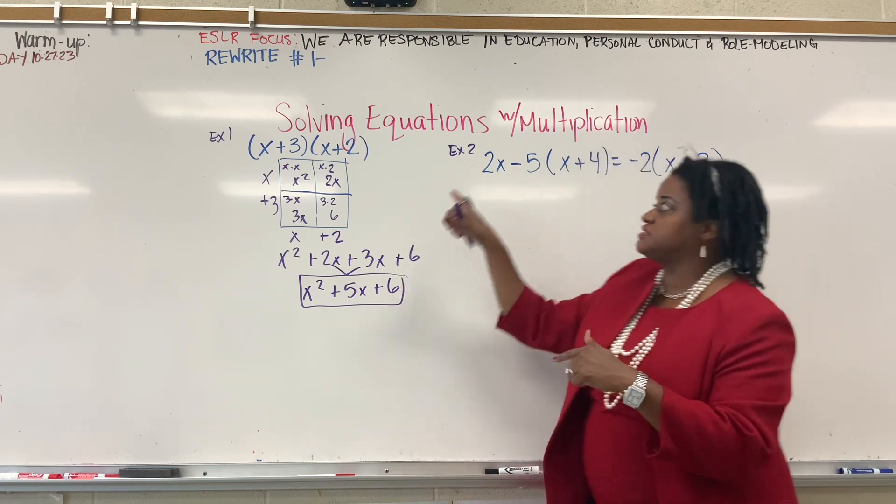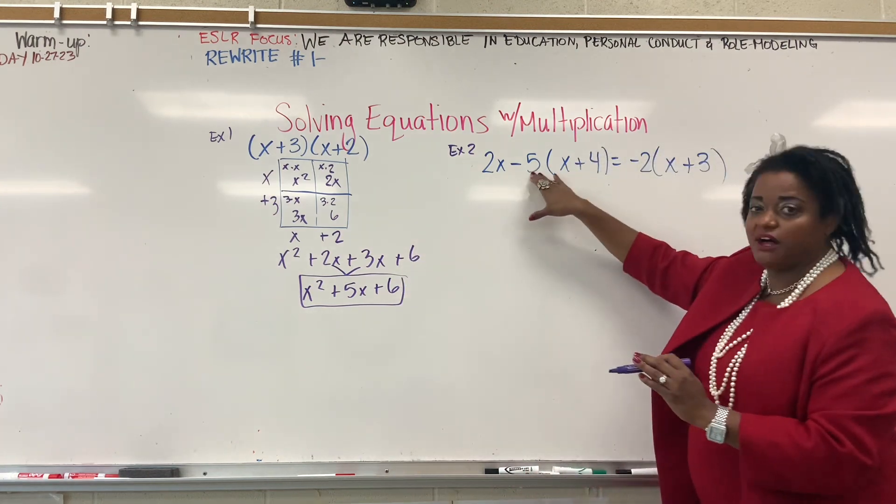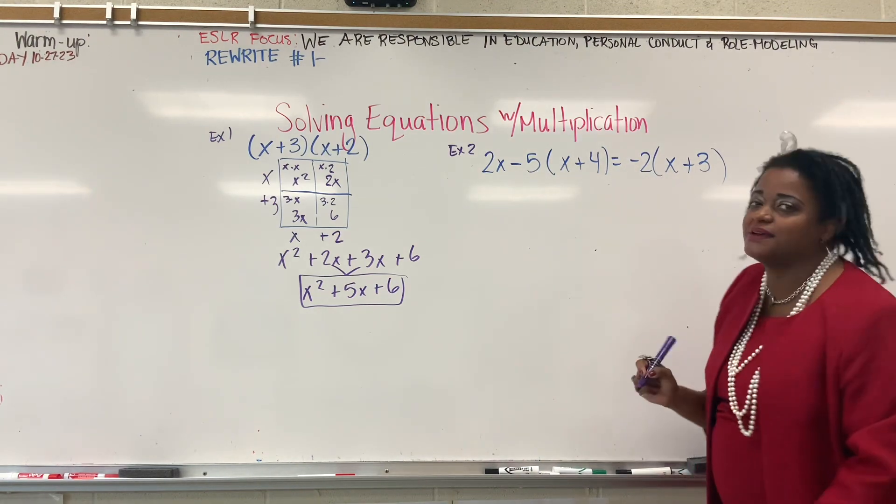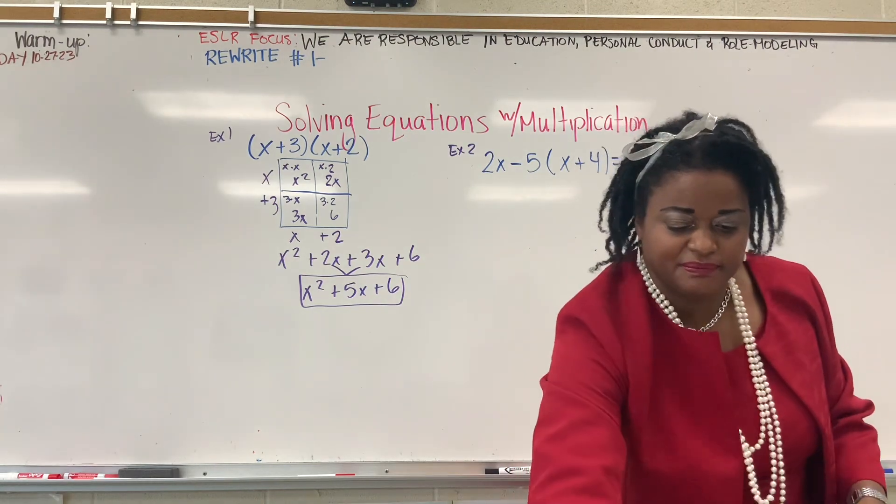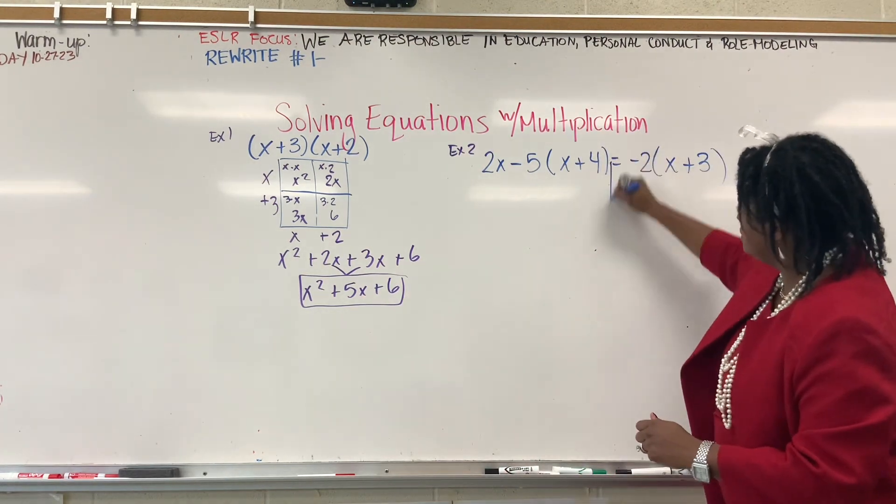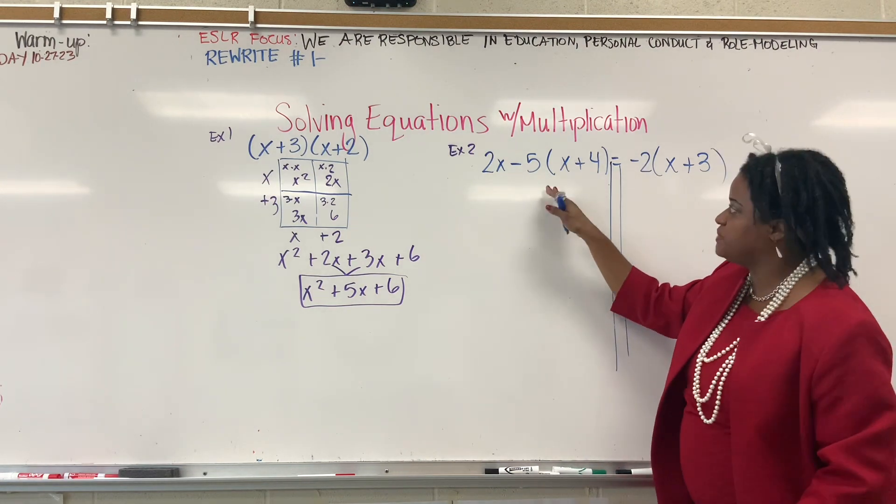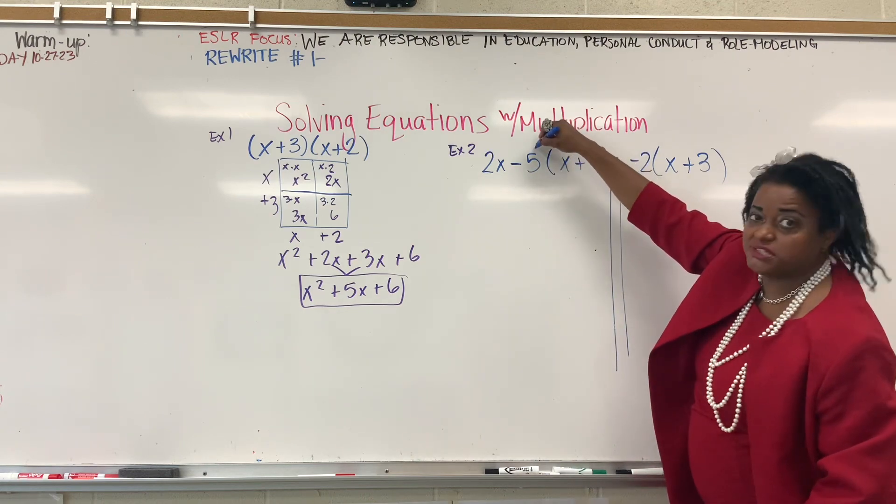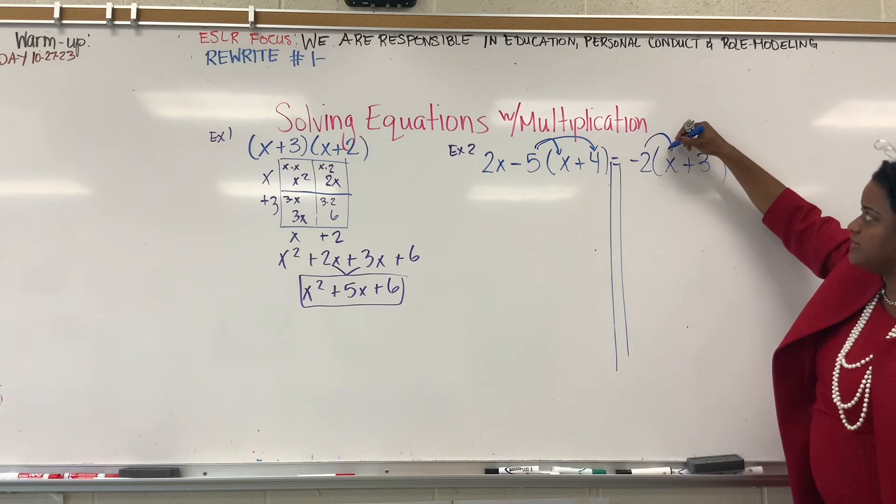Now, we're going to transition into equations. When we have an equation, we want to solve for x. Equal sign means equal, means solve. So, we'll do our train tracks, and let's change our color here. Now, we don't have to make a box here, because it doesn't have two binomials like it did over there. We're going to distribute the negative 5 and the negative 2.